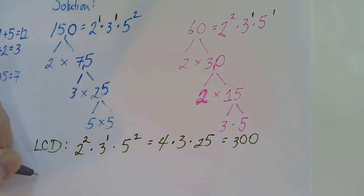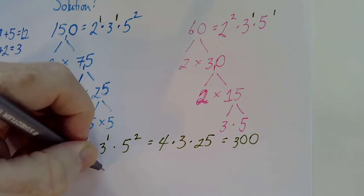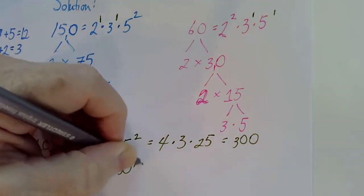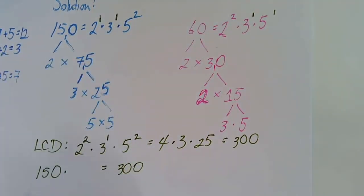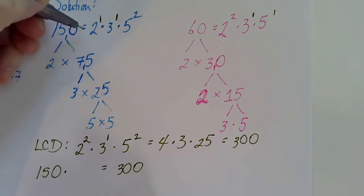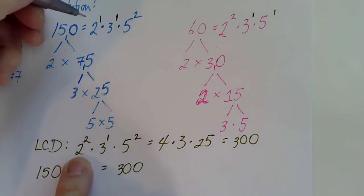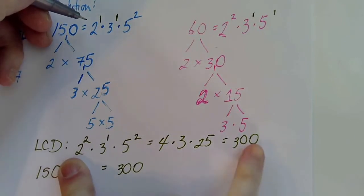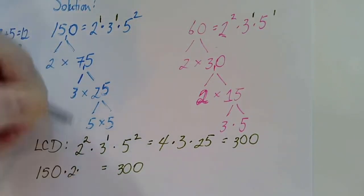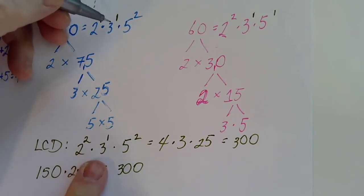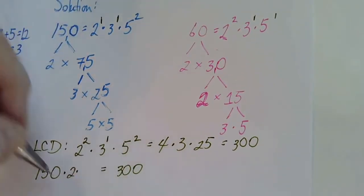All right, so we've got one hundred fifty. What do we have to multiply one hundred fifty by to get three hundred? Well, let's see. We had one two in one fifty, and we had two twos in the least common denominator, so we definitely have a two. We have one three. We have two fives, so we just multiply by two. That's nice.